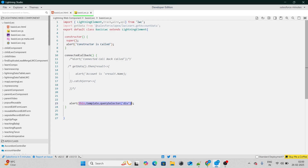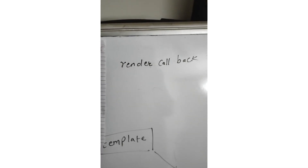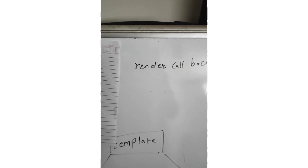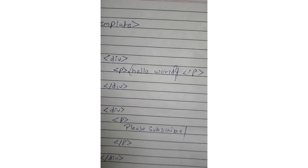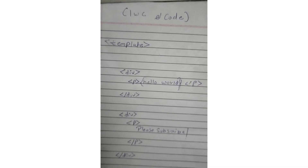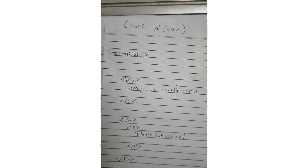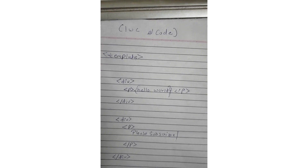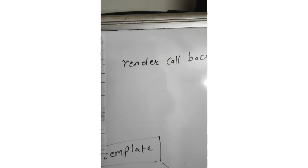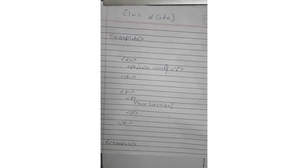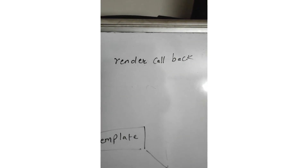Let's move on to our next lifecycle hook, which is render callback. Every time your LWC component is re-rendered, that's where render callback is called. I have this LWC code and I've created a variable called helloWorld — I gave it curly braces so it became a variable. Let's consider this variable is reactive — let's say it's tracked, decorated, or even reactive by default. So it's a reactive variable. Every time I change the value of this variable, your whole LWC component gets re-rendered, and that's where render callback gets called. In very simple terms, every time the reactive value changes, the LWC component gets re-rendered and render callback is called.